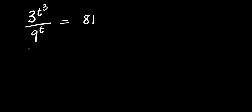Hello, how to solve this exponential problem. We have 3 to the power t cubed, divided by 9 to the power of t, equals 81. We are solving for all values of t that satisfy this equation.